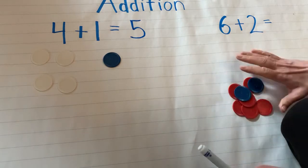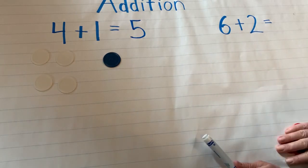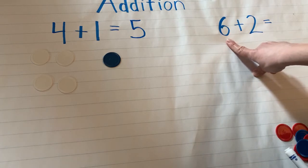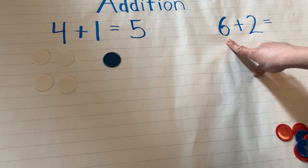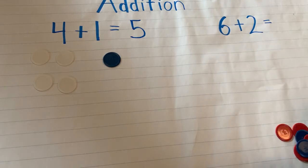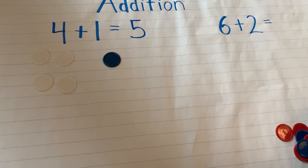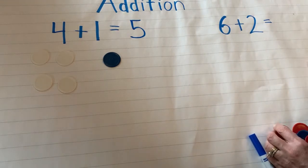But over here I have another number sentence. The first number I have here is a six. How many tokens would I put under six? If you said six, you are right. We need to put six.